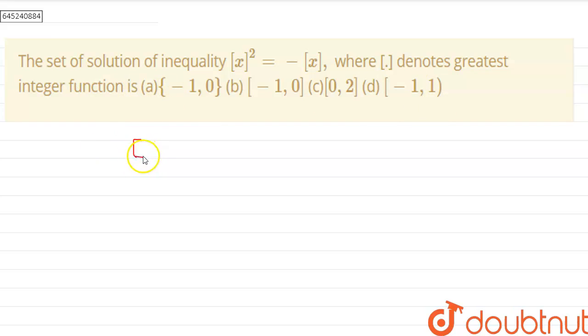We are given gif of x whole square minus this is equal to minus of gif of x. So this means gif of x square plus gif of x, this is equal to 0.